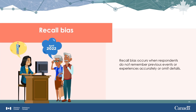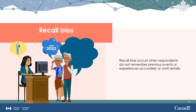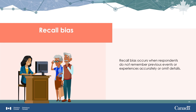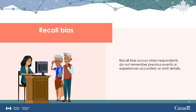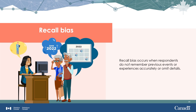Recall bias occurs when respondents do not remember previous events or experiences accurately, or omit details. For example, a respondent may have difficulty remembering how much they paid for gas in the past month, or if asked about doctor visits in the past year, might include a visit from 15 months ago or forget one from 10 months ago.